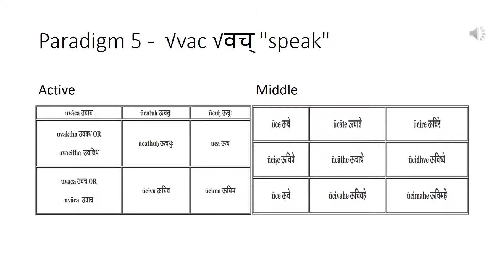Let us take the root 'vac' (speak) as an example of a conjugation of a root that undergoes samprasaraṇa, with the initial 'va' contracted to 'u' in the reduplication. In the strong forms, only the reduplicated syllable is contracted, while in the weak forms the radical 'va' is also contracted to 'u', giving 'u'. The strong stem is thus 'uvāc' and the weak stem is 'uc'.